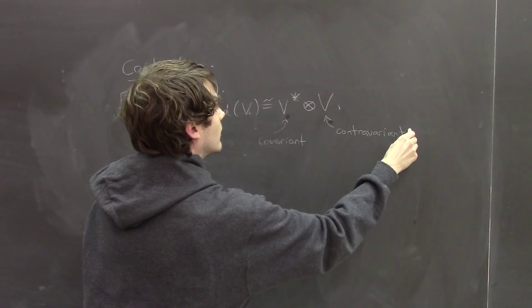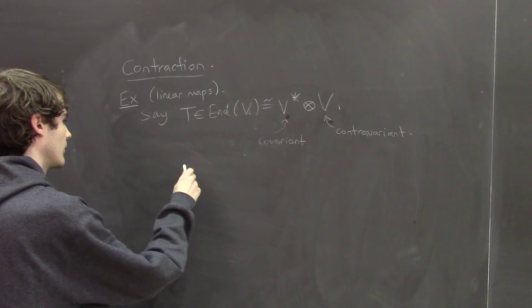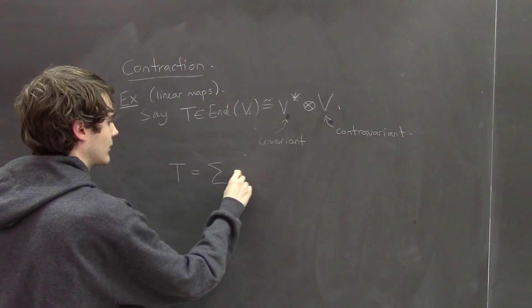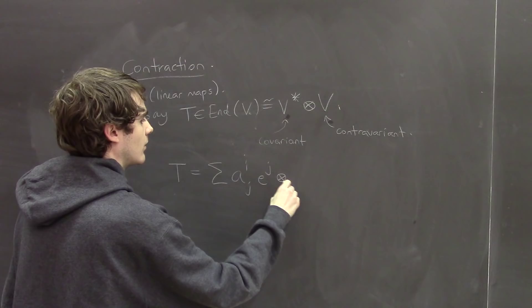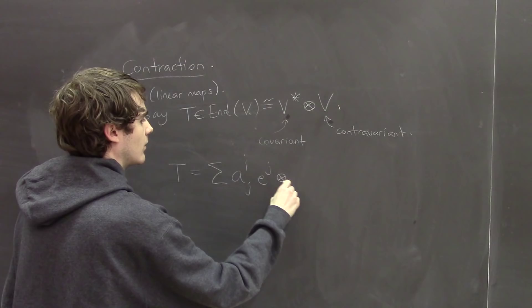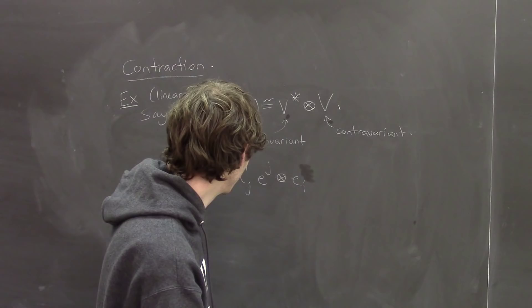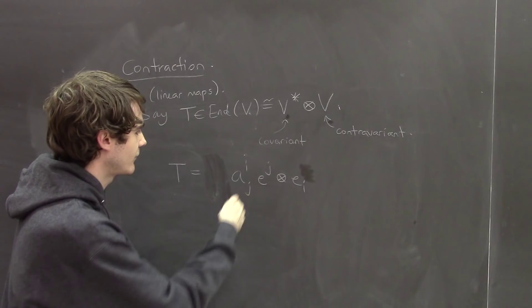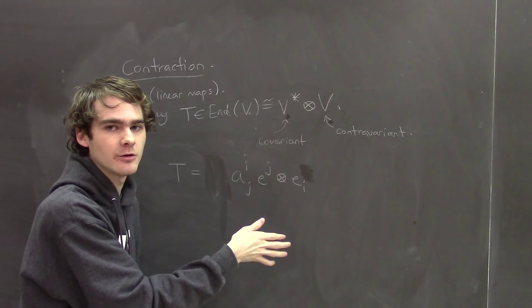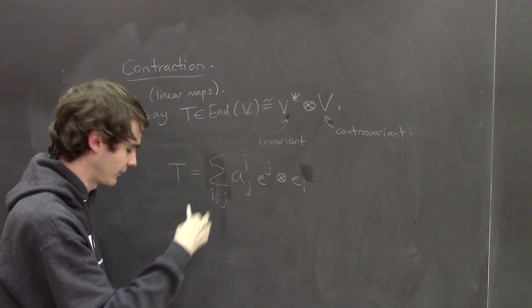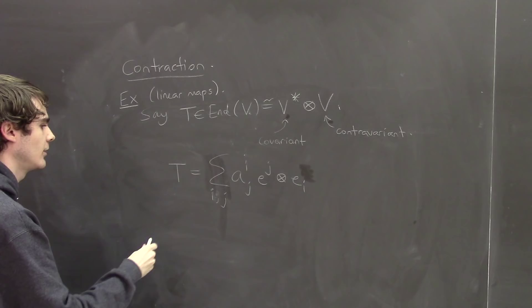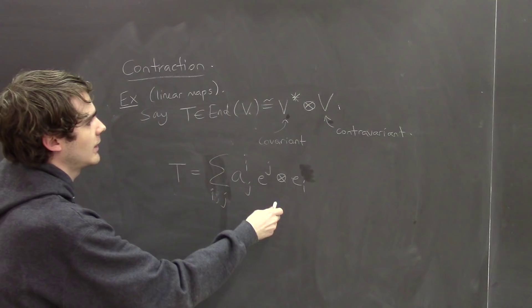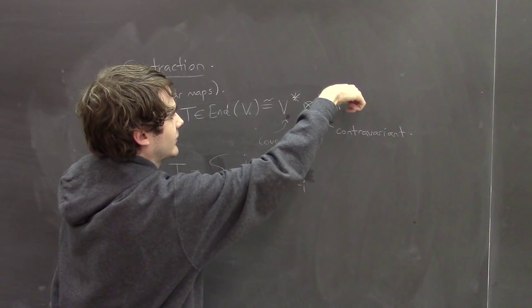These indices are called covariant and contravariant because when you change bases in differential geometry or even linear algebra, one type transforms with the change of basis and the other transforms against it. In differential geometry, people often use the Einstein summation convention: whenever an index appears both up and down in the same term, there's an implicit summation, so you just drop the sum symbol.